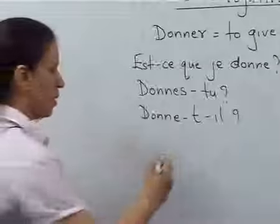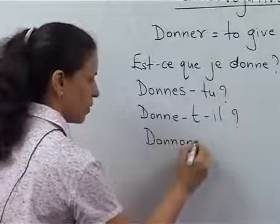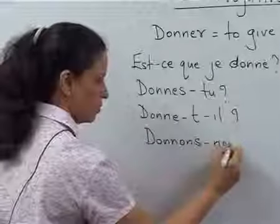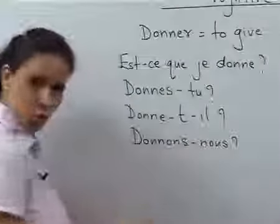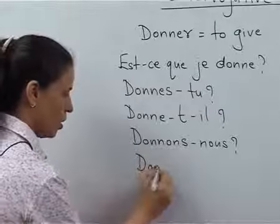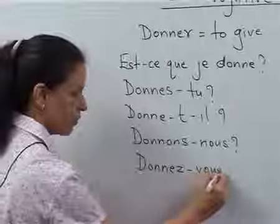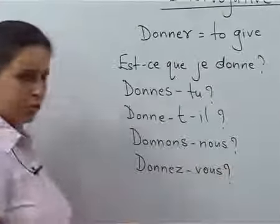Donnons-nous will mean do we give? Do we give? Donnez-vous, do you give? Now for people who don't remember, tu was you singular, tum as in for a little child or you singular.